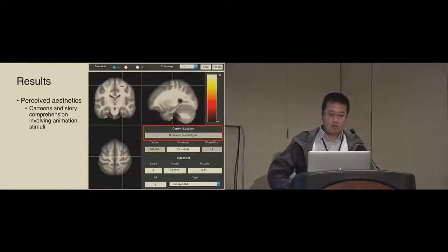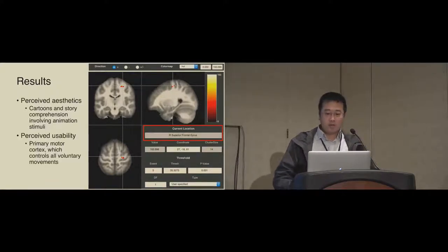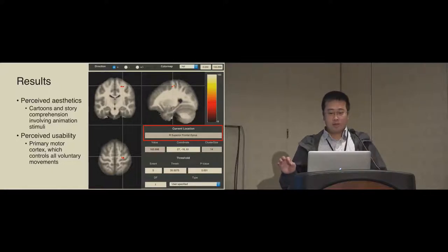The result that we found in this experiment is that in terms of perceived aesthetic, the brain areas activated are in line with previous studies shown in cartoons or story comprehension involving animation stimuli. But interestingly, for perceived usability, we found activation in the brain area in the primary motor cortex, which controls all our voluntary movements. This result suggests that perceived usability is somewhat more related to action as compared to perceived aesthetic.